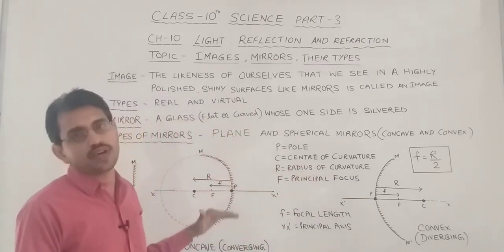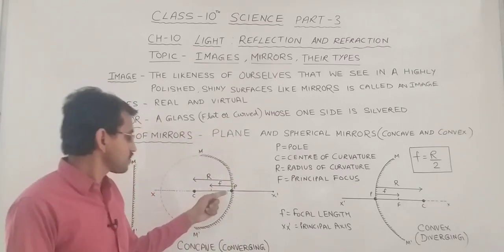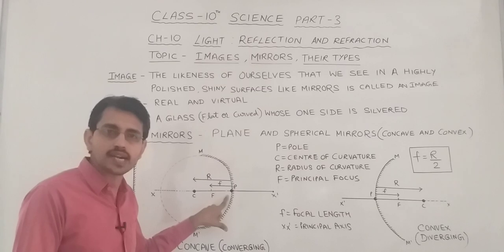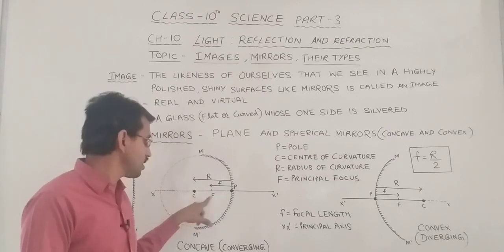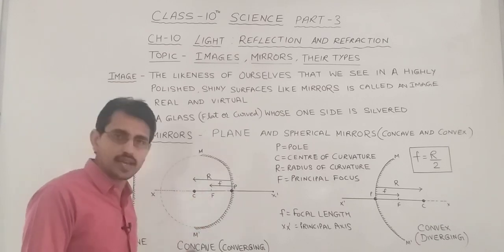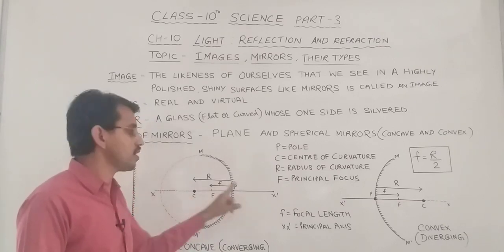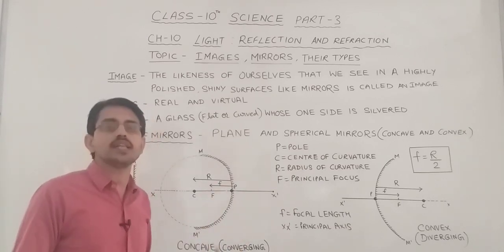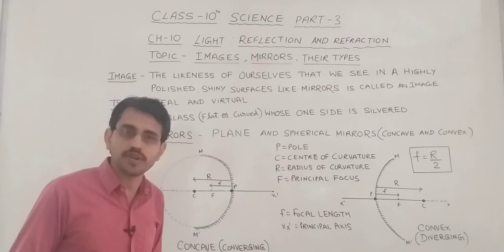Let's take a quick recap: The center of the hollow sphere of which the mirror is a part is called the center of curvature. The midpoint of the reflecting surface is the pole. The line joining P to C is the radius of curvature. Between P and C lies the principal focus. The distance of the principal focus from the pole is the focal length, which is half of the radius of curvature. The line through P and C extended on either side is the principal axis. In the next video, we will draw ray diagrams using these mirrors.